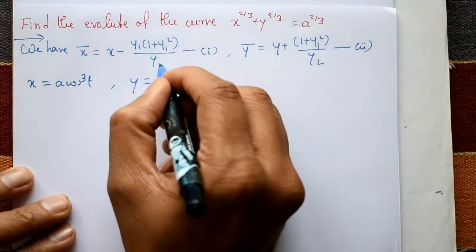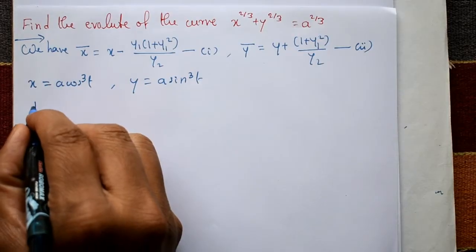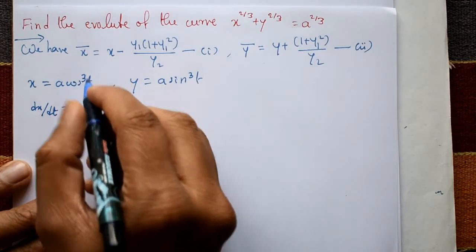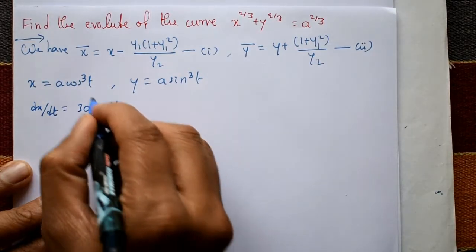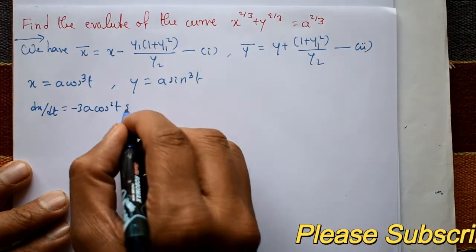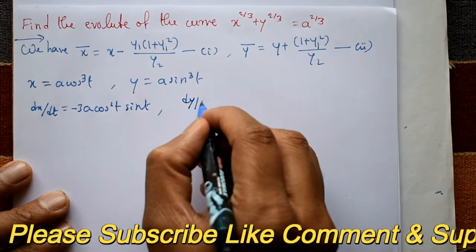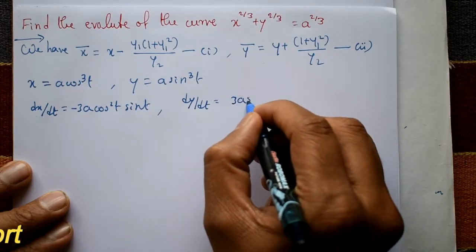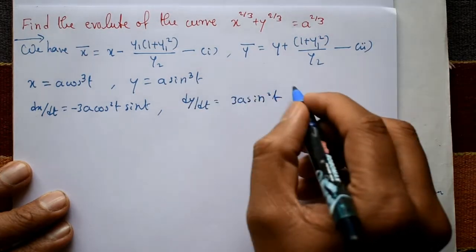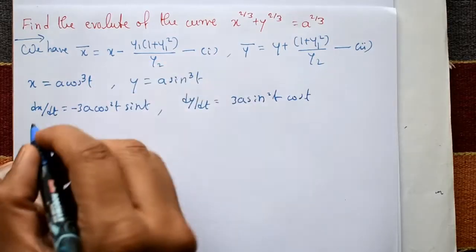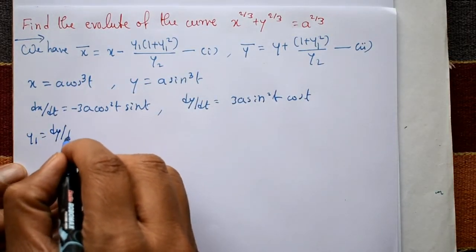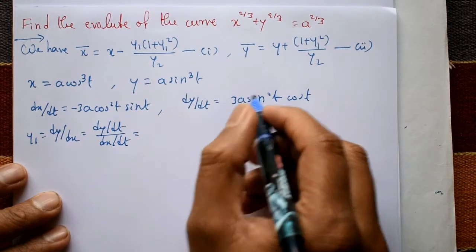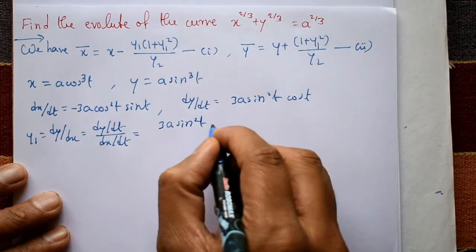We need y1 and y2. Differentiate x with respect to t: a is constant, so differentiating cos³(t) gives 3cos²(t)·(-sin(t)). Differentiate y with respect to t: differentiating sin³(t) gives 3sin²(t)·cos(t). Then y1 = dy/dx = (dy/dt)/(dx/dt), which is 3a·sin²(t)·cos(t) divided by the derivative of x.